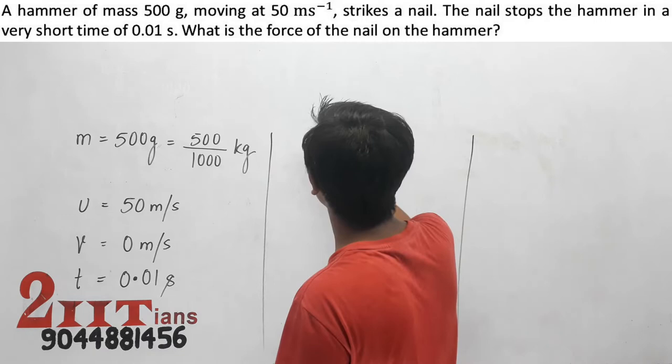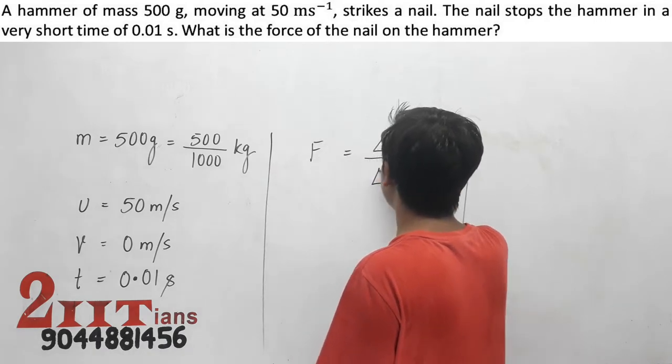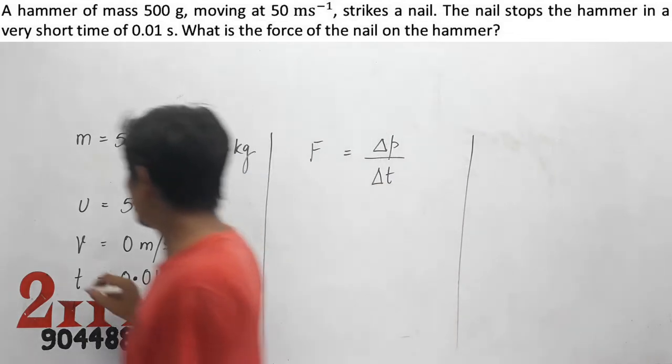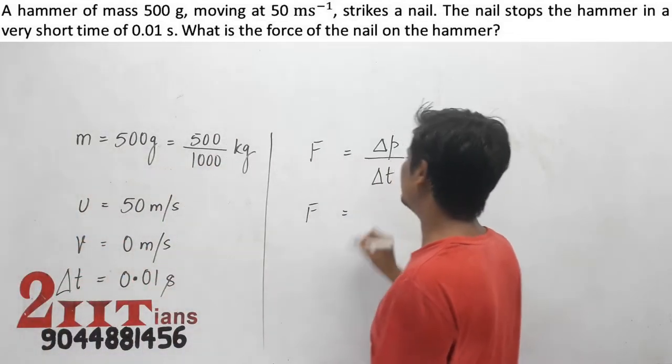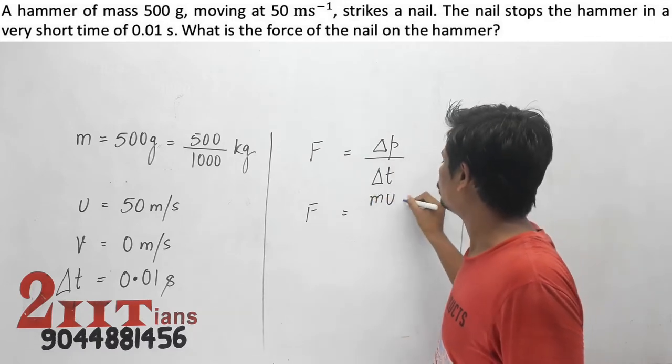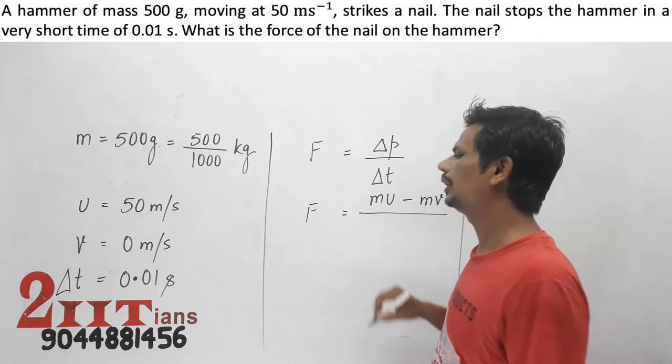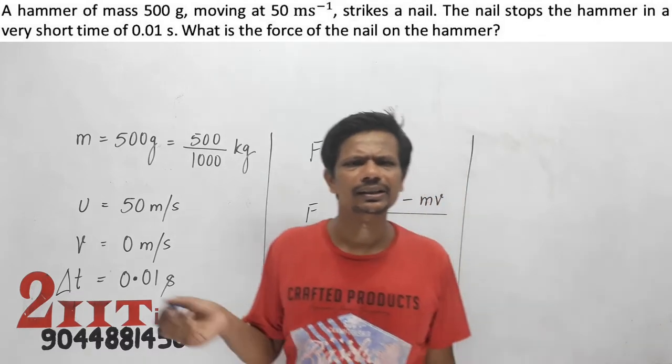Using Newton's law, F is equal to delta p by delta t. Delta p is the change in momentum: m u minus m v, initial minus final. We have to calculate the retardation.